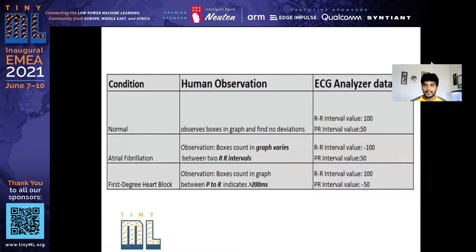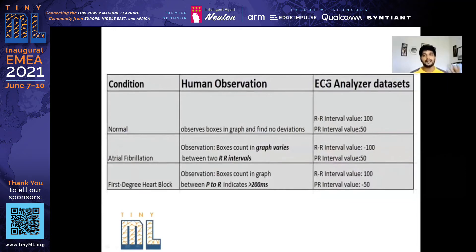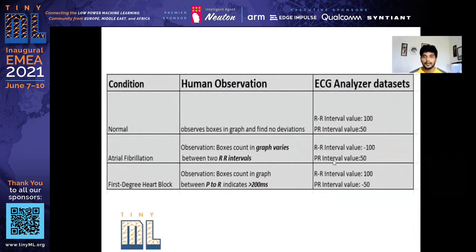Here you can see the human observation converted into ECG Analyzer datasets. For normal people there won't be any deviation — R interval is set to 100 and PR interval is set to 50. For atrial fibrillation cases, there will be a deviation between the R-to-R intervals, and once that deviation is observed, the value will transfer down to minus 100, changing from 100 to minus 100.